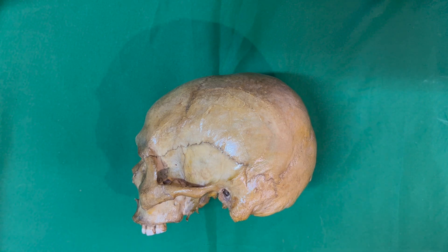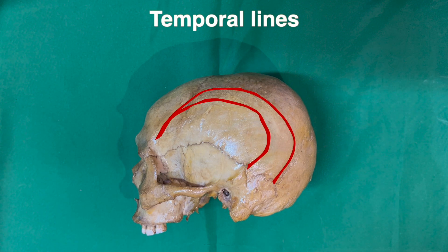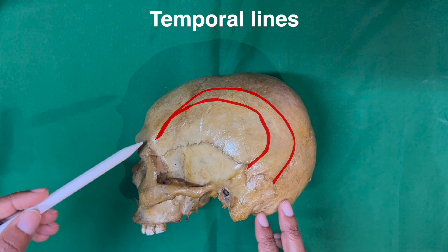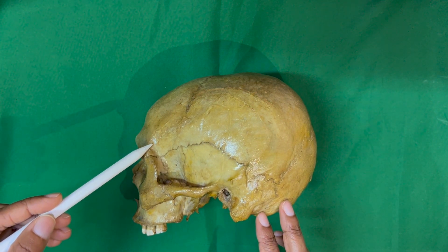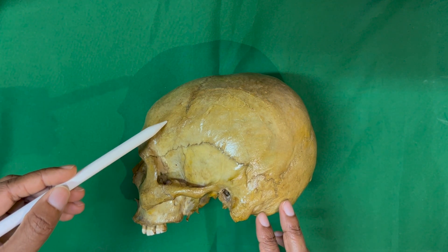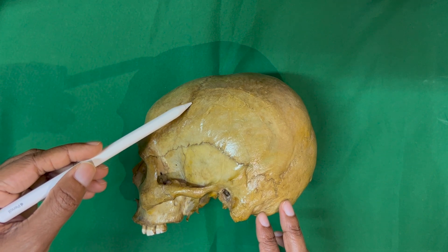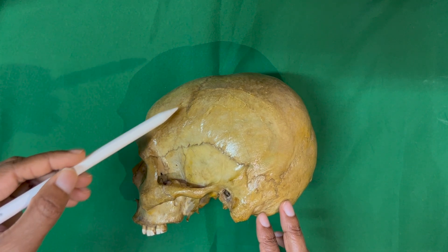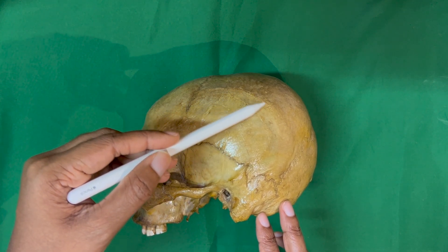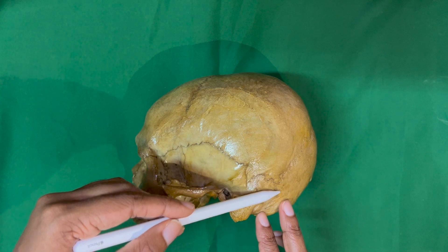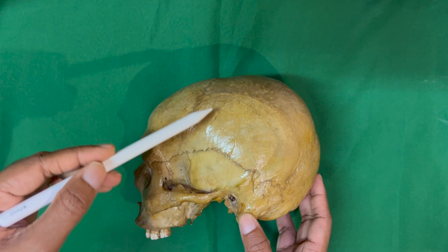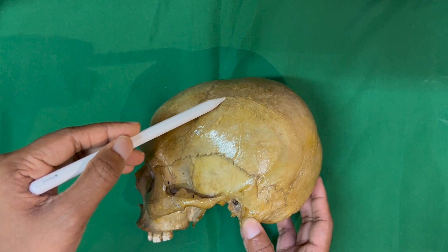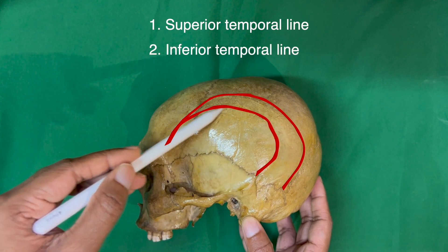Laterally on the vault are the temporal lines that begin at the zygomatic process of the frontal bone, arch backwards and upwards, and cross the frontal bone, the coronal suture, and the parietal bone. Over the parietal bone, there are two lines: superior and inferior.